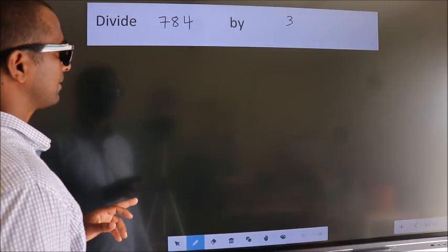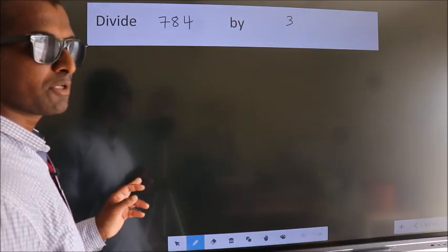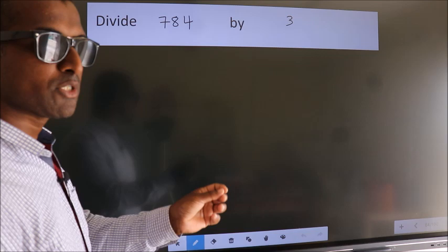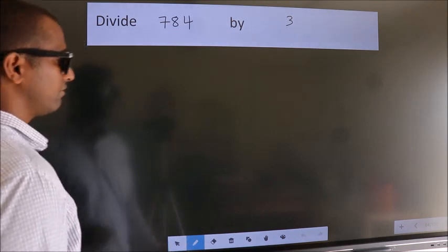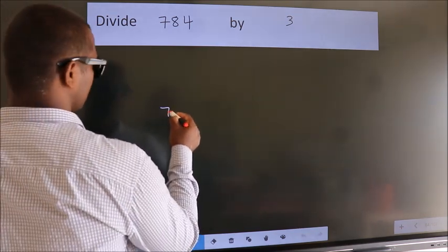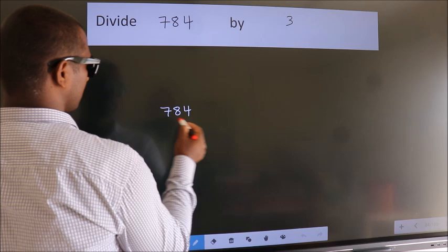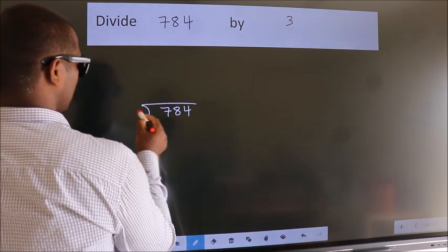Divide 784 by 3. To do this division, we should frame it in this way. 784 here, 3 here.